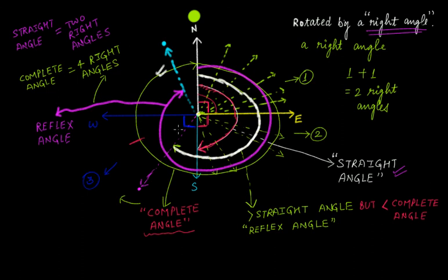So we have discussed right angle, straight angle, complete angle, and reflex angle. If the angle you are making from the initial position to the position where you are standing right now is greater than a straight angle but less than a complete angle, then that will be a reflex angle — whether you are standing here at this point or at another such position, it is a reflex angle.